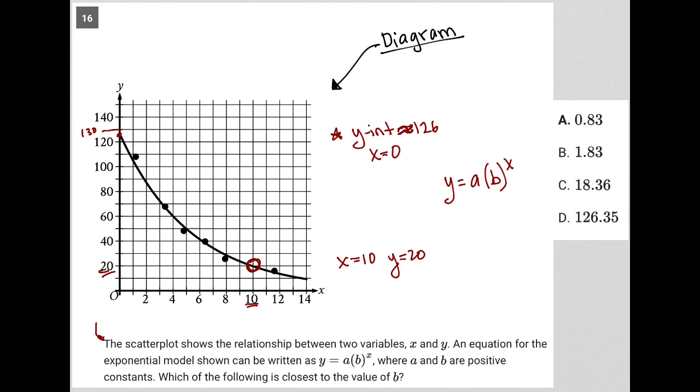I'm going to replace x with 0, replace y with 126, and I would get 126 equals a times b to the 0. Anything to the 0 power is equal to 1, so this whole thing just becomes a 1, which means we get 126 equals a.